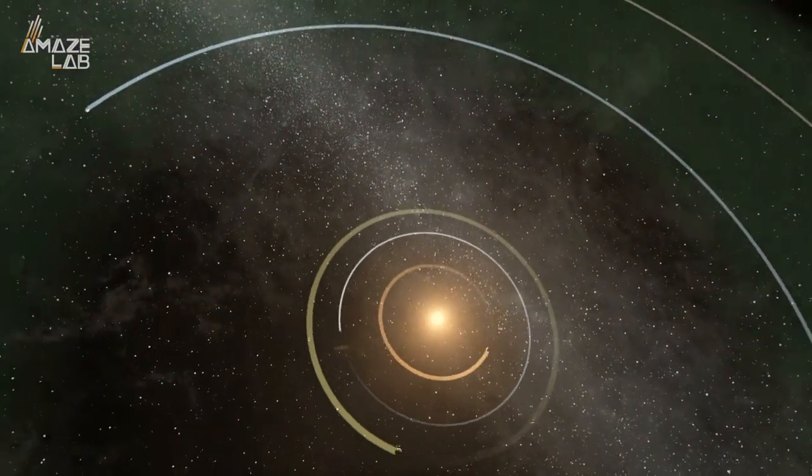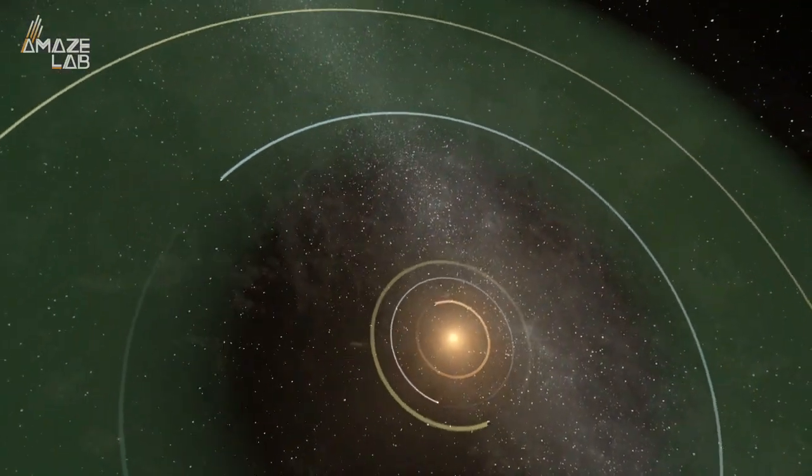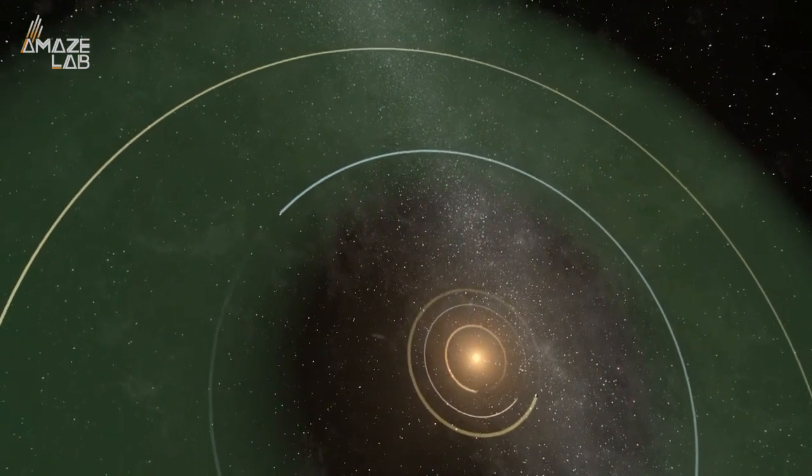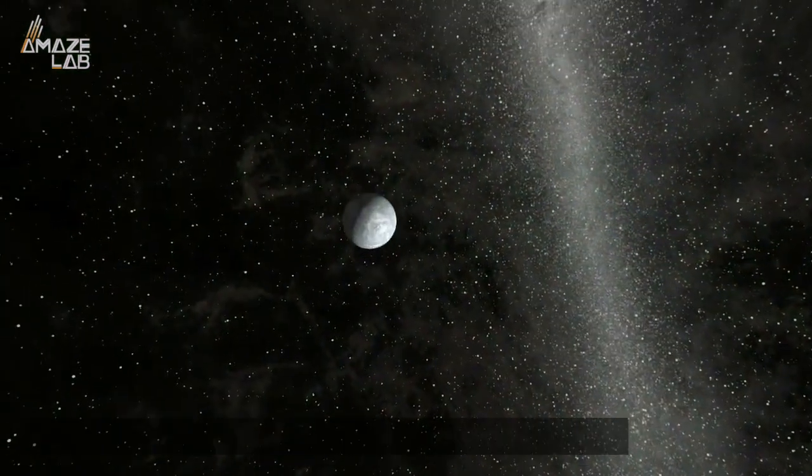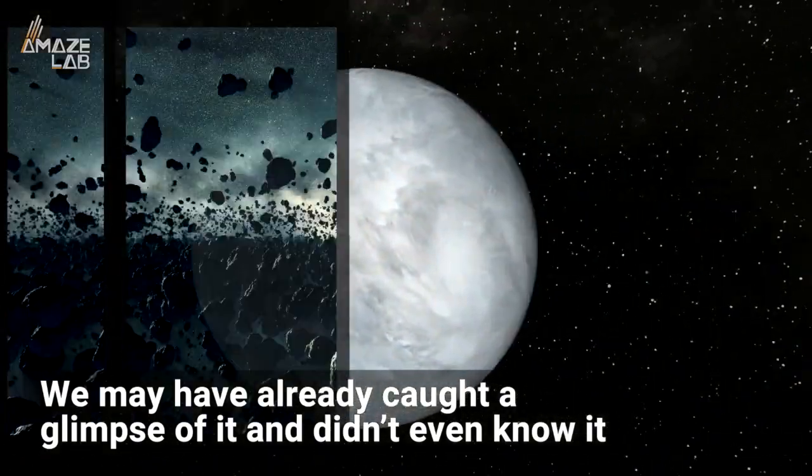But now astronomers say there could actually be a ninth hidden out there in an orbit so massive, it could take thousands upon thousands of earth years for it to travel around the sun just once. And the craziest thing? We may have already caught a glimpse of it and didn't even know it.